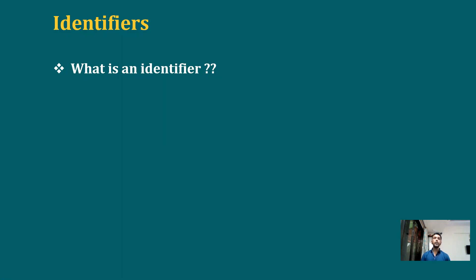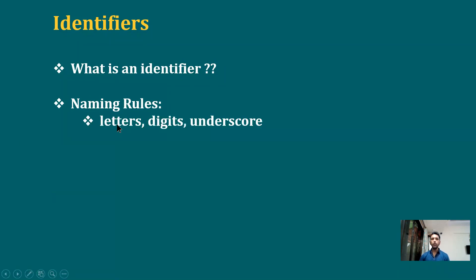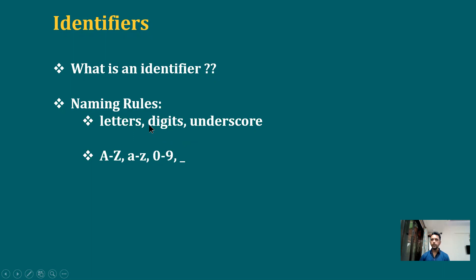In Python, you can choose your own identifier names for variables, functions, and so on. But when choosing a name, there are rules you need to follow. Rule number one: the name should contain only letters, digits, and underscore. Your identifier can have alphabets A to Z in uppercase or lowercase, digits 0 to 9, and underscore.